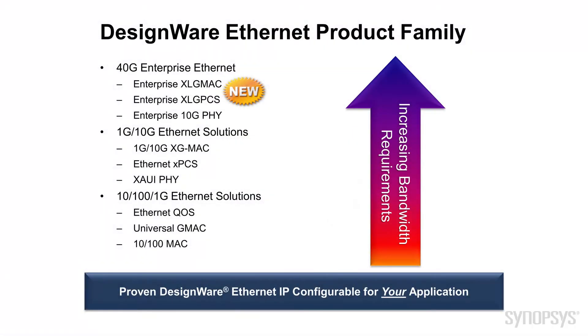The explosion in data has really driven a need for faster and faster networking, and Ethernet 40GB is the next step for this protocol.